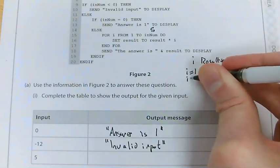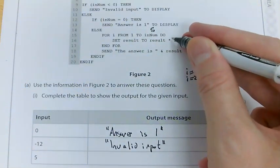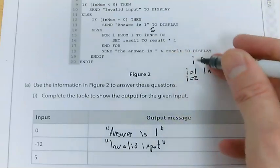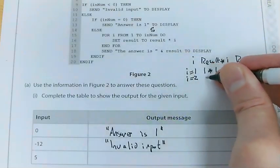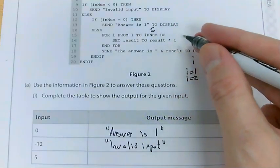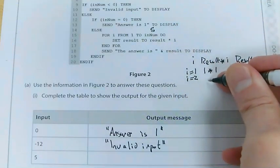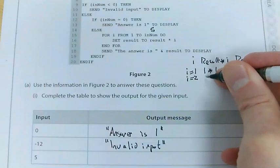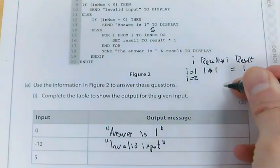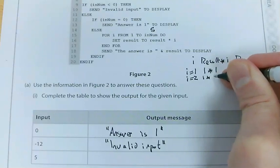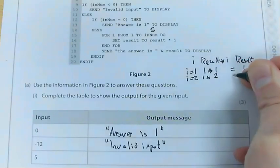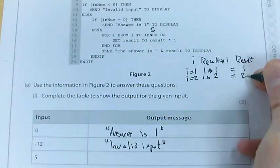Now, next line. I'm running it again. 1 to inNum. So 1 to 5. I'm running it again with i equals 2. So i now equals 2. So result to result times i. So result is 1. 1 times 2 equals 2.